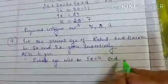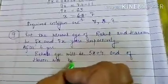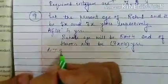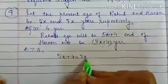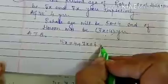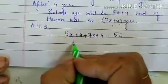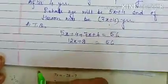And Harun's age will be 7x plus 4. According to the question, 5x plus 4 plus 7x plus 4 equals 56. Like terms 5x and 7x are added. So 12x plus 8 is equal to 56.